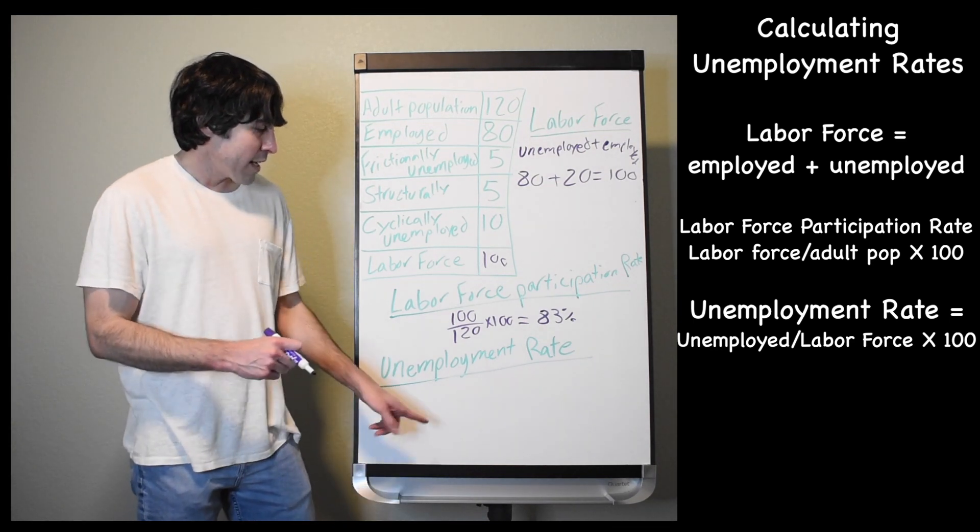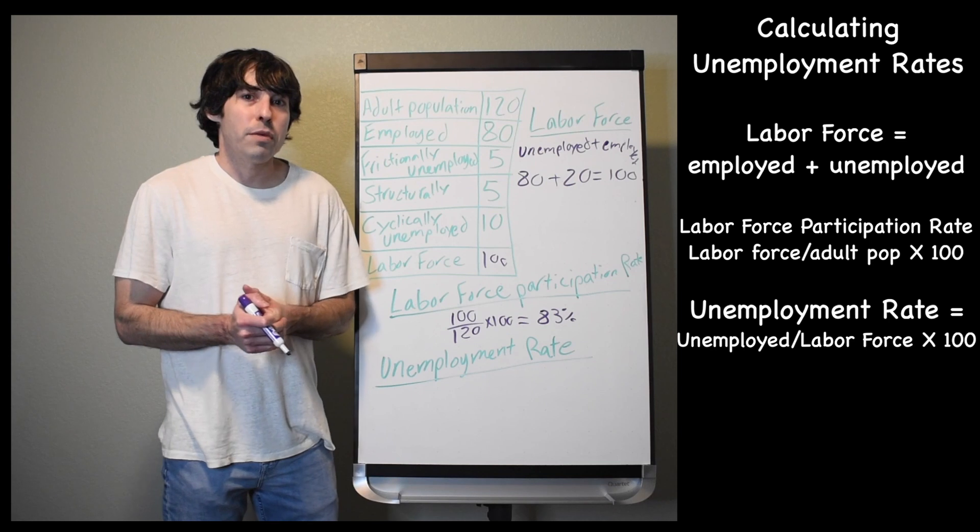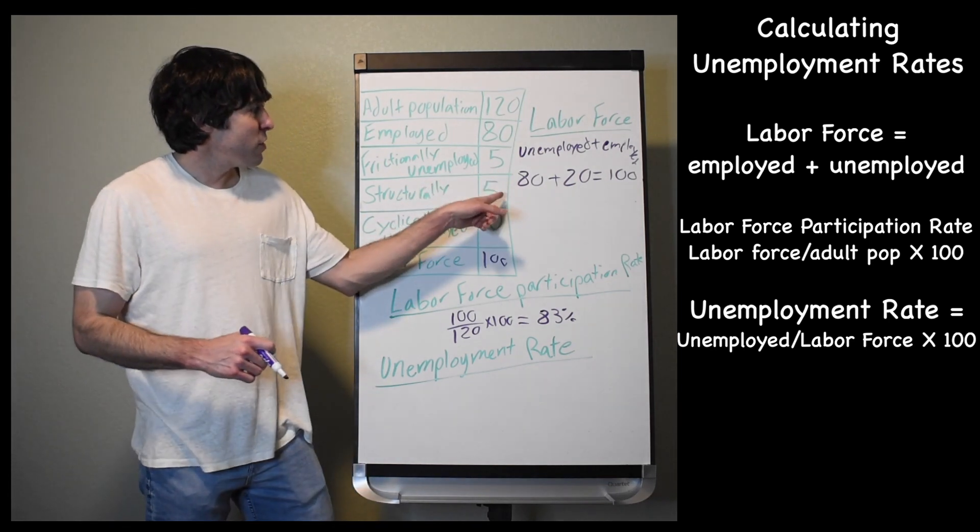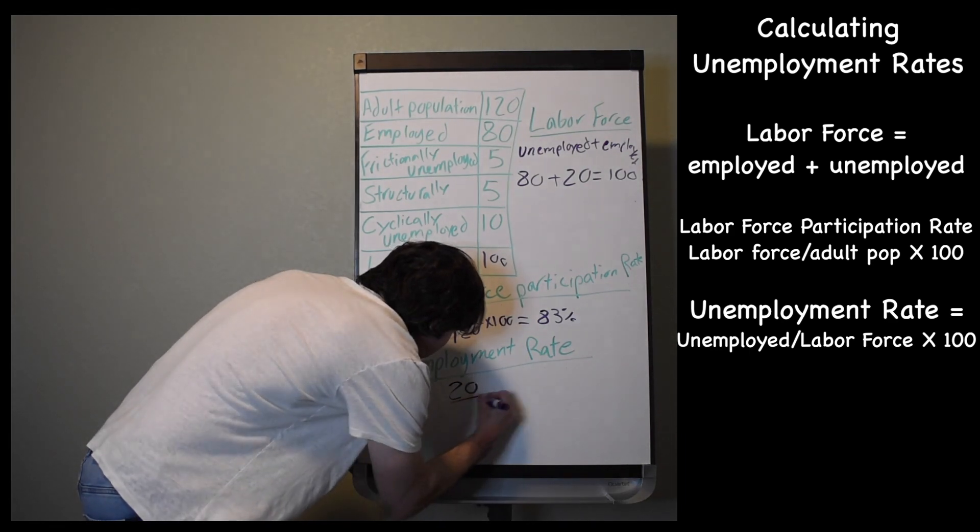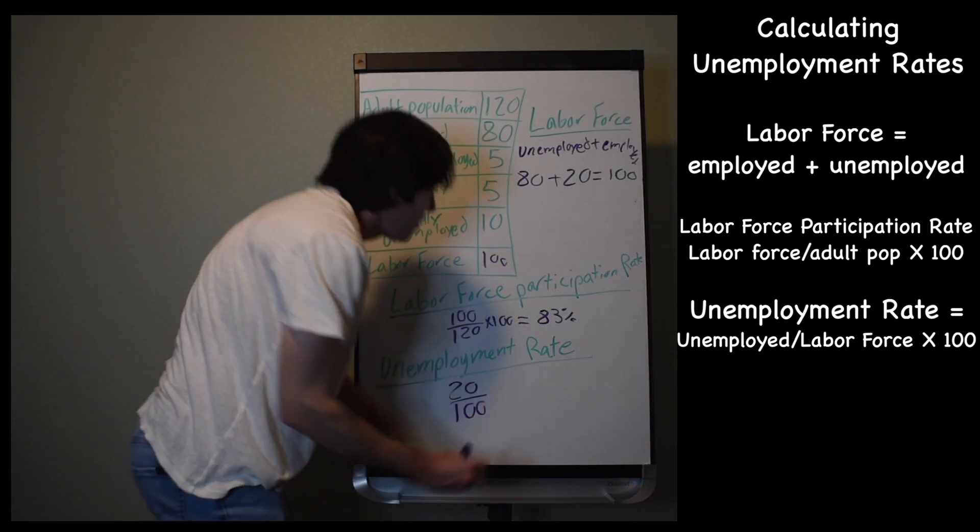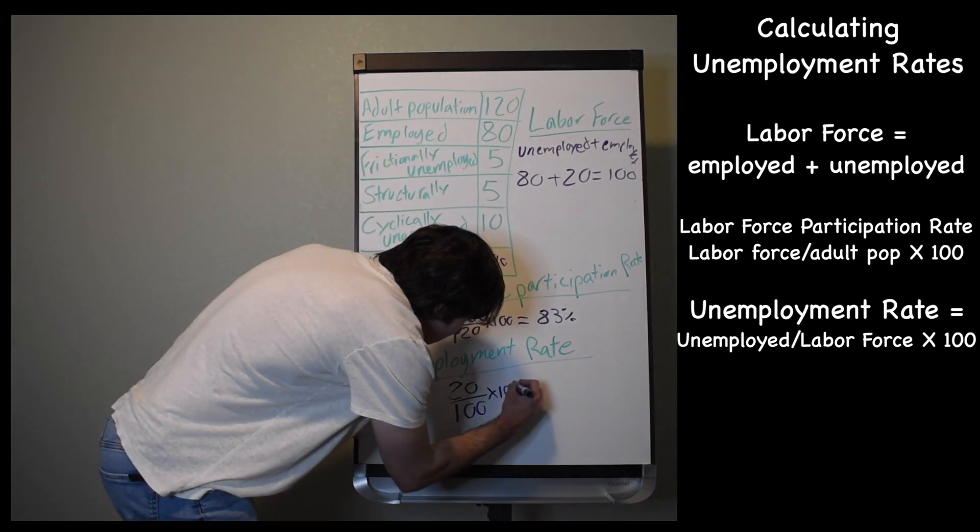Finally, what we all came for, calculating our unemployment rate. To get that, you're going to take your unemployed people, all of them, 5 plus 5 plus 10, that's going to be 20, our unemployed people, and we're going to divide that by the labor force of 100, which we calculated back at the beginning, and then multiply that by 100.